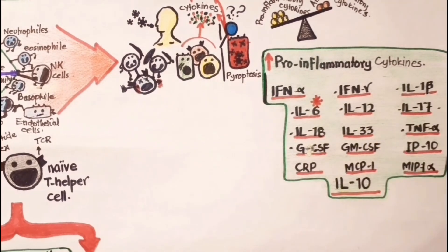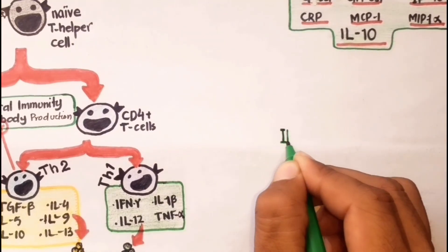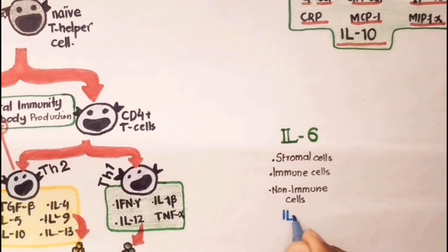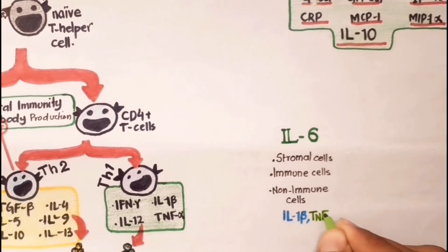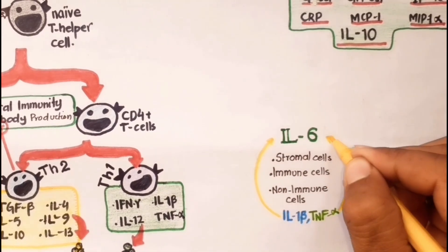One of the most important cytokines produced as a consequence of SARS-CoV-2 infection is IL-6, a pleiotropic pro-inflammatory mediator that plays a key role in the pathogenesis of cytokine storm. It is produced by almost all stem cells, immune cells like B lymphocytes and T lymphocytes, and non-lymphocytic cells such as endothelial cells and tumor cells. The production of IL-6 is increased by IL-1 beta and TNF-alpha.